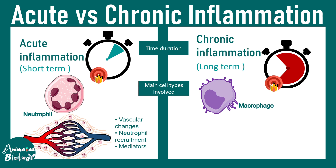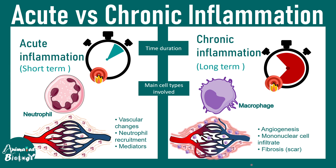In acute inflammation there are vascular changes, neutrophil recruitment, and inflammatory mediators that can lead to vasodilation. In chronic inflammation there could be angiogenesis — growth of new blood vessels — mononuclear cell infiltration of cells with only one nucleus such as macrophages and plasma cells, and fibrosis, meaning sometimes scar formation. These are the salient differences between acute and chronic inflammation.